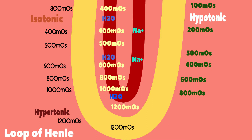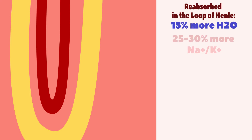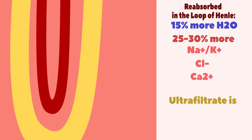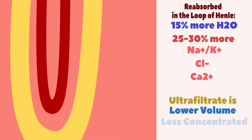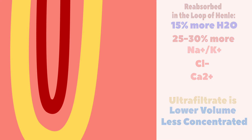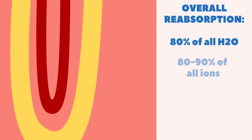Ultimately, by the time the ultrafiltrate leaves the loop of Henle, approximately 15% more water, and 25 to 30% more sodium, potassium, chloride, and calcium ions have been reabsorbed back into the blood. This equates to an ultrafiltrate that is further lower in volume and significantly less concentrated than before. Roughly 80% of all water and 80 to 90% of all ions filtered out of the blood in the glomerulus have been reabsorbed back into the blood at this point.